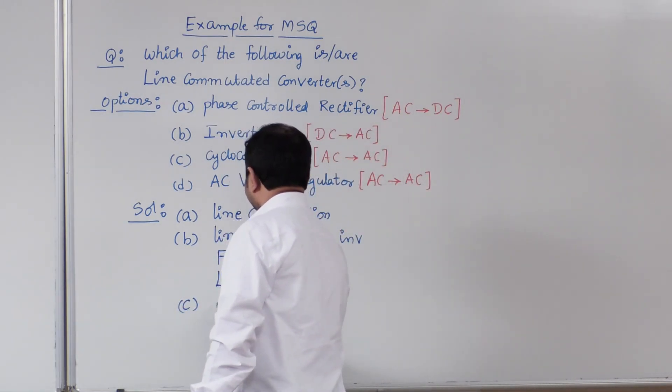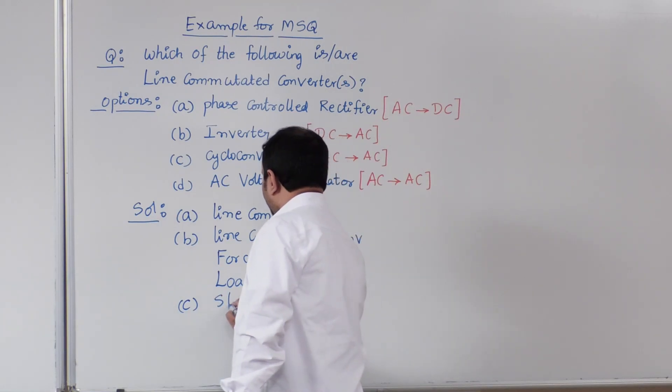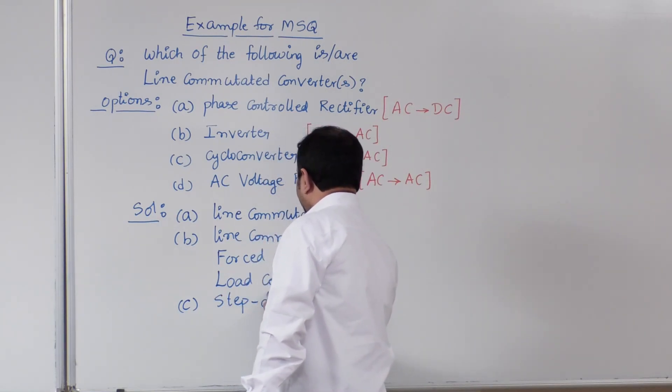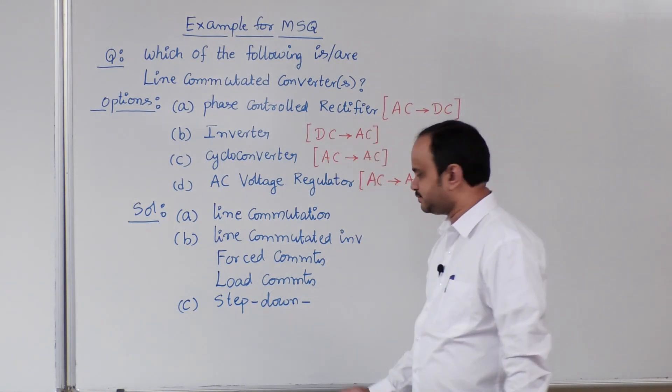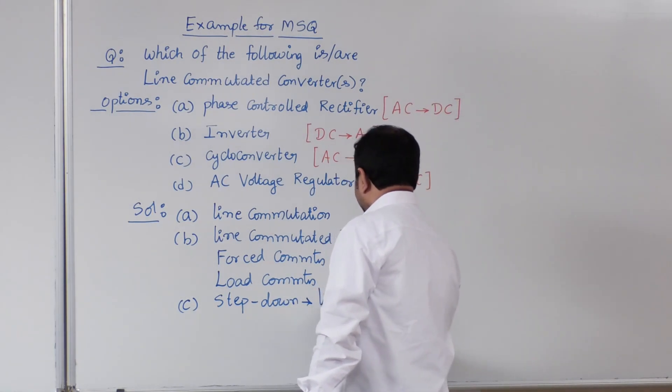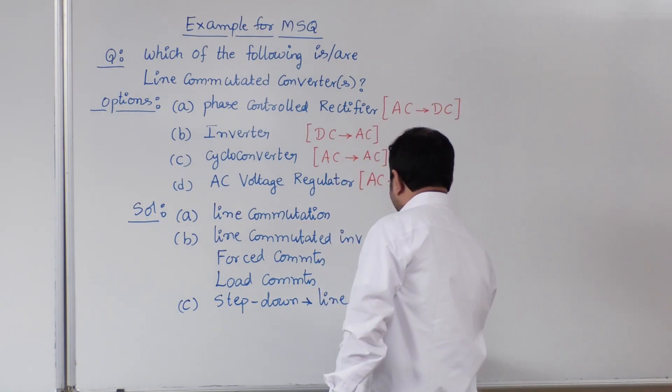Cycloconverter, when it is operating as step-down cycloconverter, it has line commutation constant.